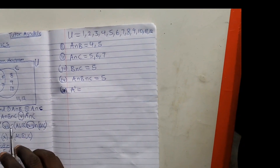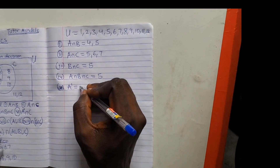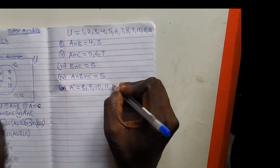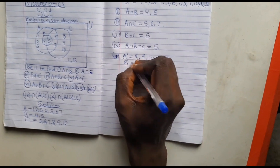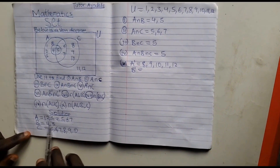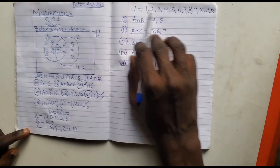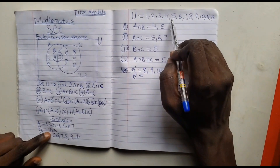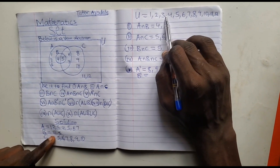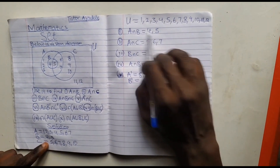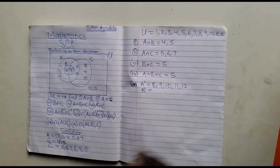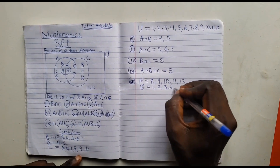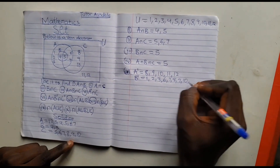Now let's find B prime. B prime means elements that are not in B, that are present in the universe. B has {4, 5}. So the elements in the universe that are not in B are: 1, 2, 3, 6, 7, 8, 9, 10, 11, and 12. We don't pick 4 and 5 because they are in B. So B prime = {1, 2, 3, 6, 7, 8, 9, 10, 11, 12}.